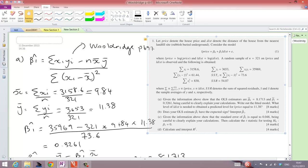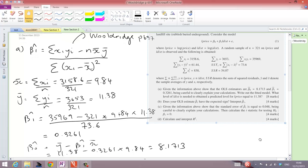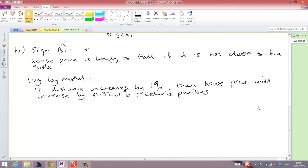Question C is asking us to show that the standard error of beta 1 hat is equal to 0.048. And then we're asked to calculate the T stat to test the null hypothesis that beta 1 equals 0. So, we need the formula for the standard error of beta hat for the simple regression. This is equal to the square root of the estimated error variance divided by the total sum of squares x.